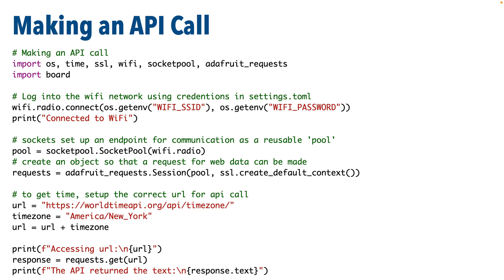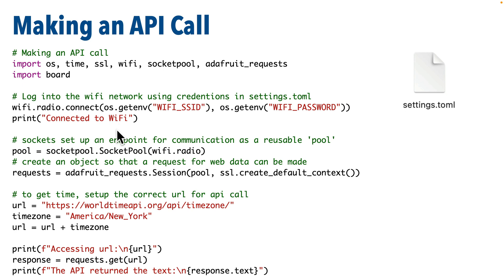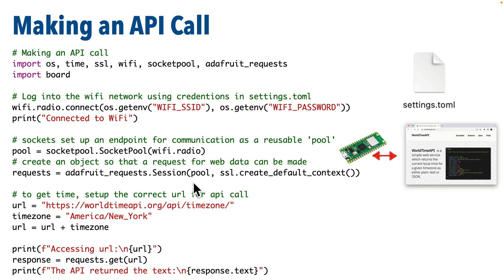Now let's look at the code to access the internet. There are several libraries to import: os, time, ssl, wifi, socketpool, and adafruit_requests. I put the import board statement on the line below to keep all Wi-Fi imports together for easy copy-pasting. To log into the Wi-Fi network, use wifi.radio.connect(), passing in our Wi-Fi name and password via os.getenv('WIFI_SSID') and os.getenv('WIFI_PASSWORD'), which pulls those values from settings.toml. After connecting, print a confirmation.